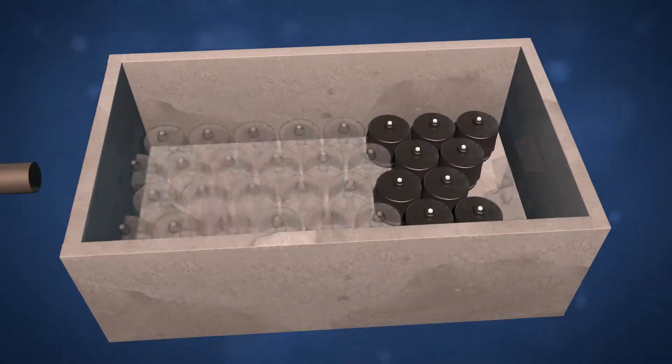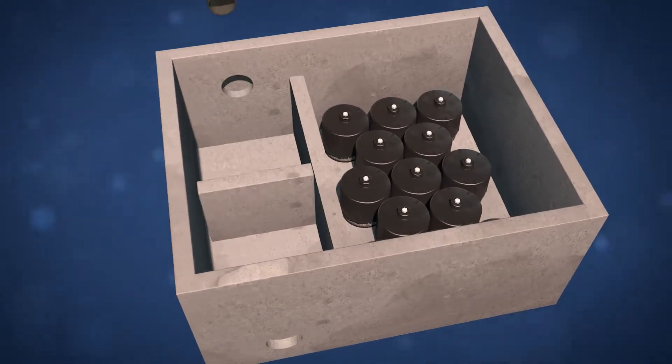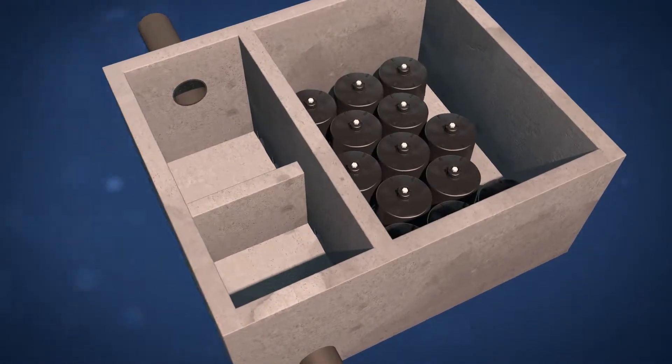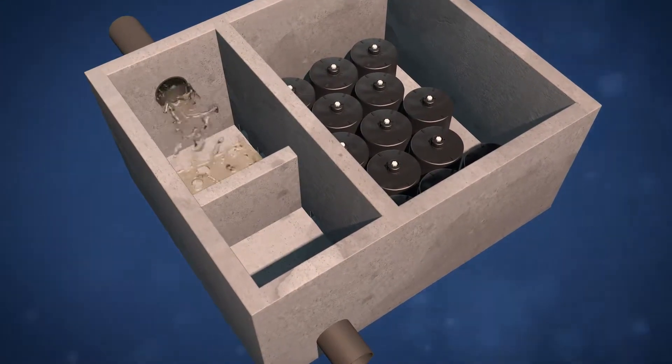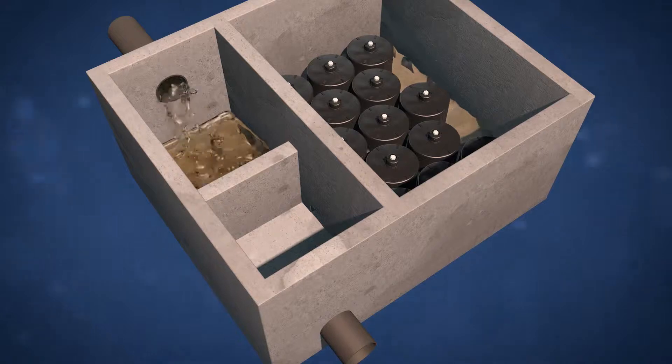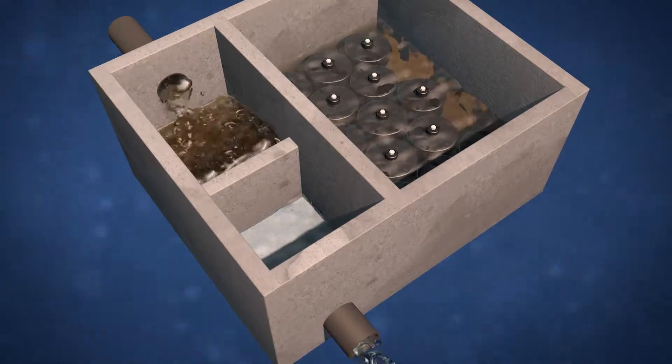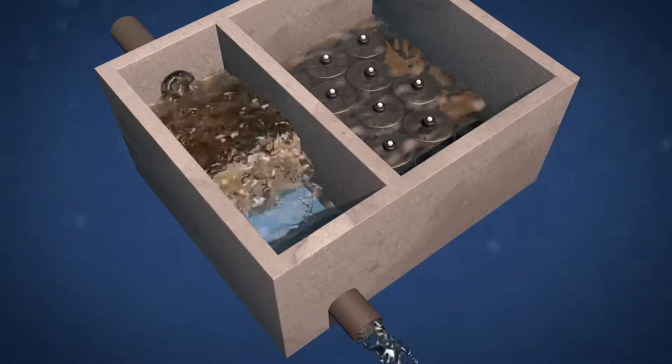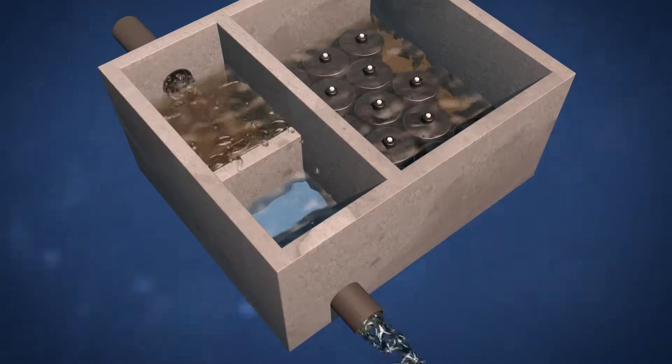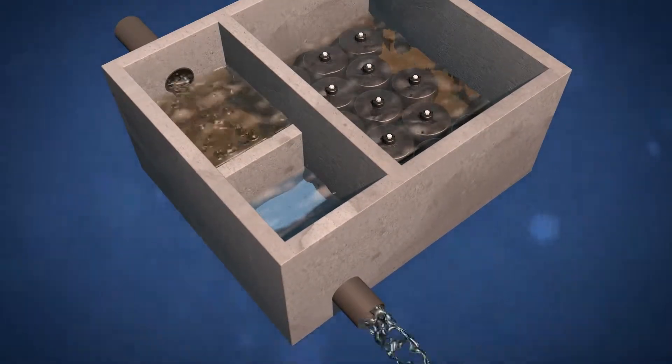The peak diversion storm filter provides high flow bypass and flow-based treatment in one structure. Water enters the vault through an inlet and is directed to a treatment chamber containing the filter cartridges. During peak flows, the internal weir allows high flows to bypass treatment, eliminating the need for an external bypass structure.